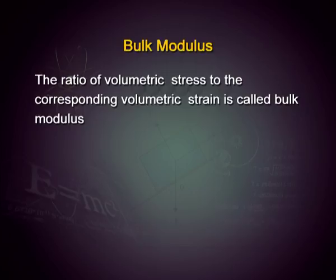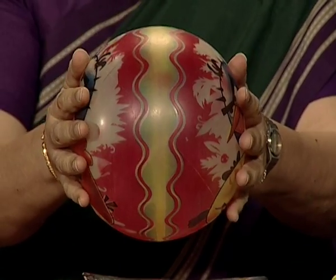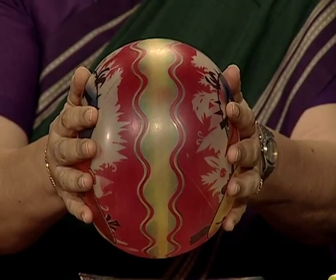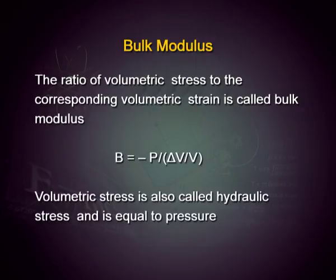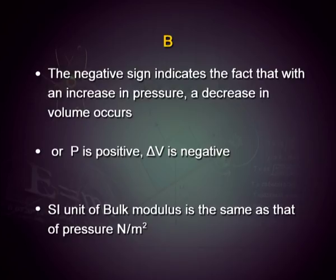Next, we go on to volumetric stress and strain. The ratio of volumetric stress to volumetric strain is known as bulk modulus, represented by B. If a hydraulic deforming force acts on a ball from all sides, its volume diminishes — positive pressure makes volume less. Therefore, B is associated with a negative sign and is given as B = −P / (ΔV/V). This value is given in Newton per meter square with the same dimensional formula.